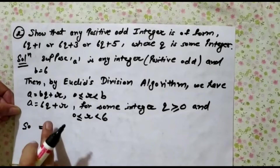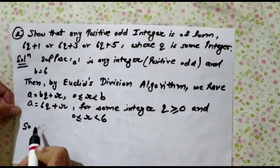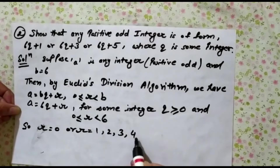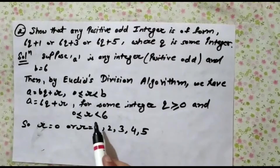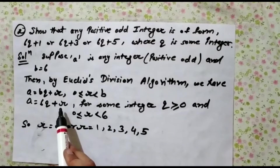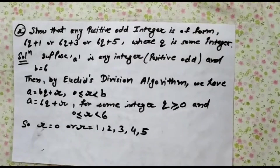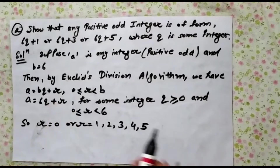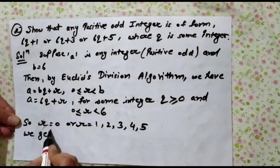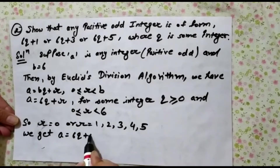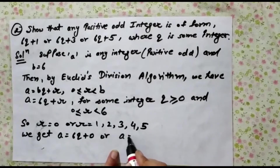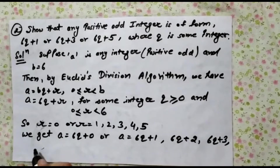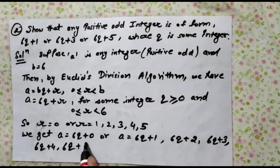This implies r equals 0, or r equals 1, 2, 3, 4, and 5 — up to 5 — because when r becomes 6, the remainder resets. That is why the remainder is always less than b. Putting the values in the equation, we get: a equals 6q plus 0, or a equals 6q plus 1, 6q plus 2, 6q plus 3, 6q plus 4, or 6q plus 5.